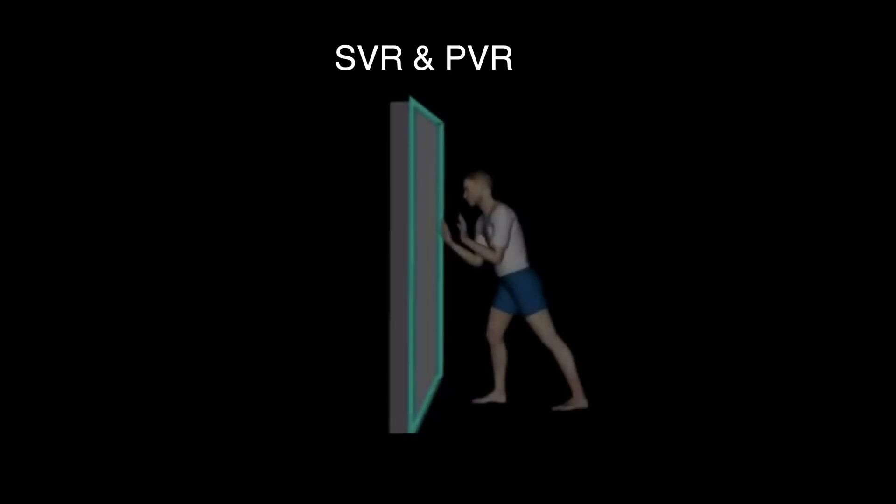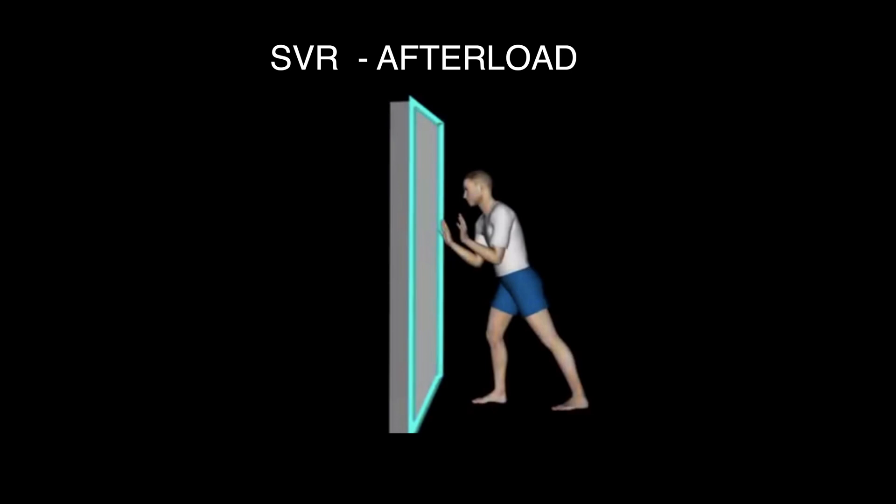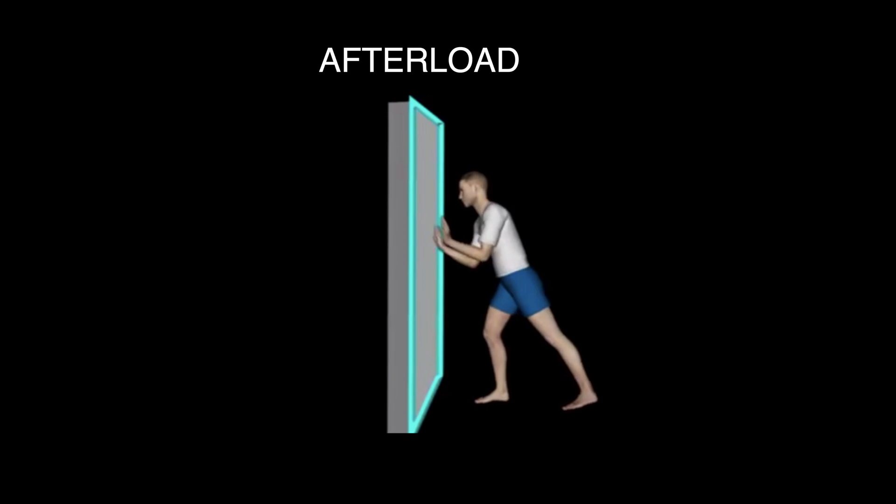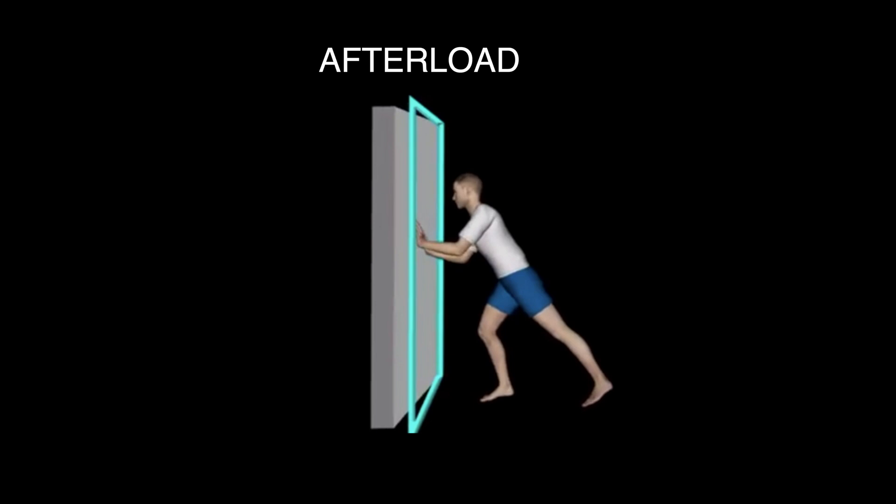The Swan-Ganz measures systemic vascular resistance and pulmonary vascular resistance. The systemic vascular resistance measures the afterload, or resistance of the left ventricle. Afterload is defined as the resistance the blood in the ventricle must overcome to force the valves open, and eject contents into circulation.